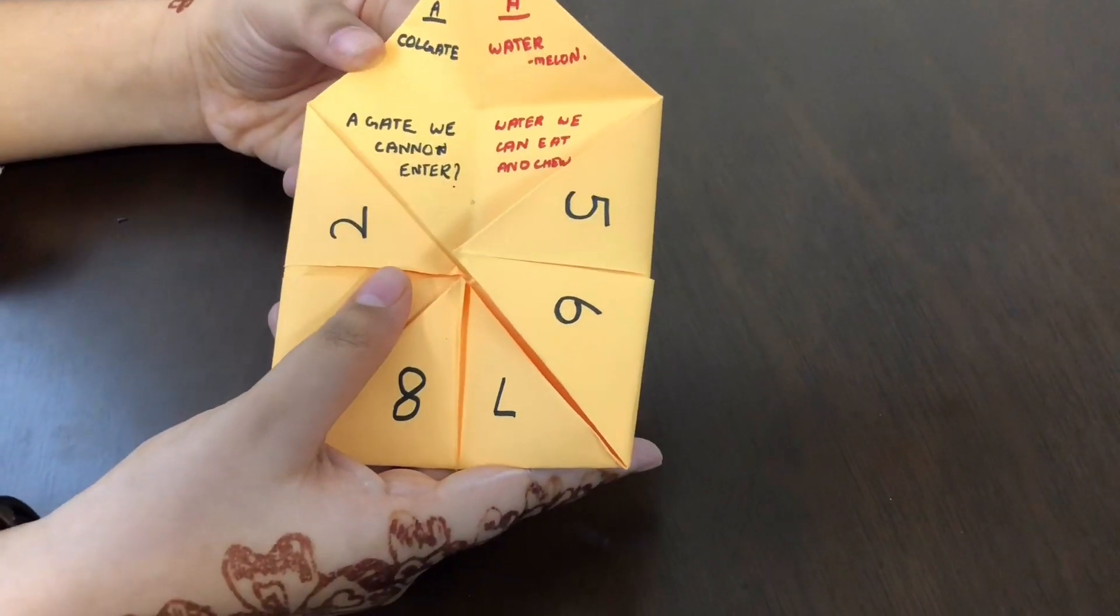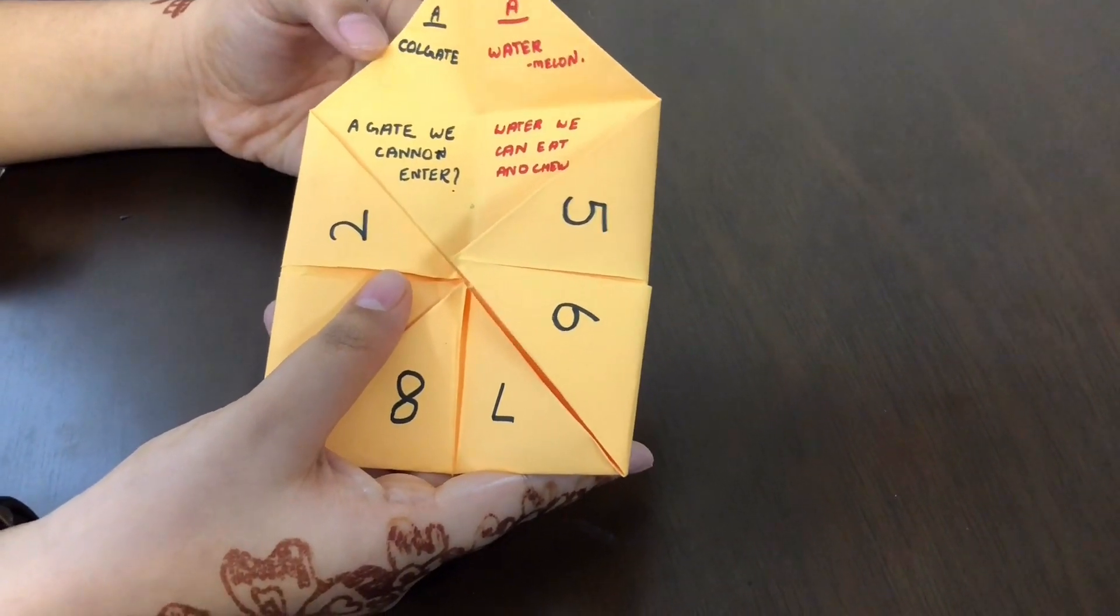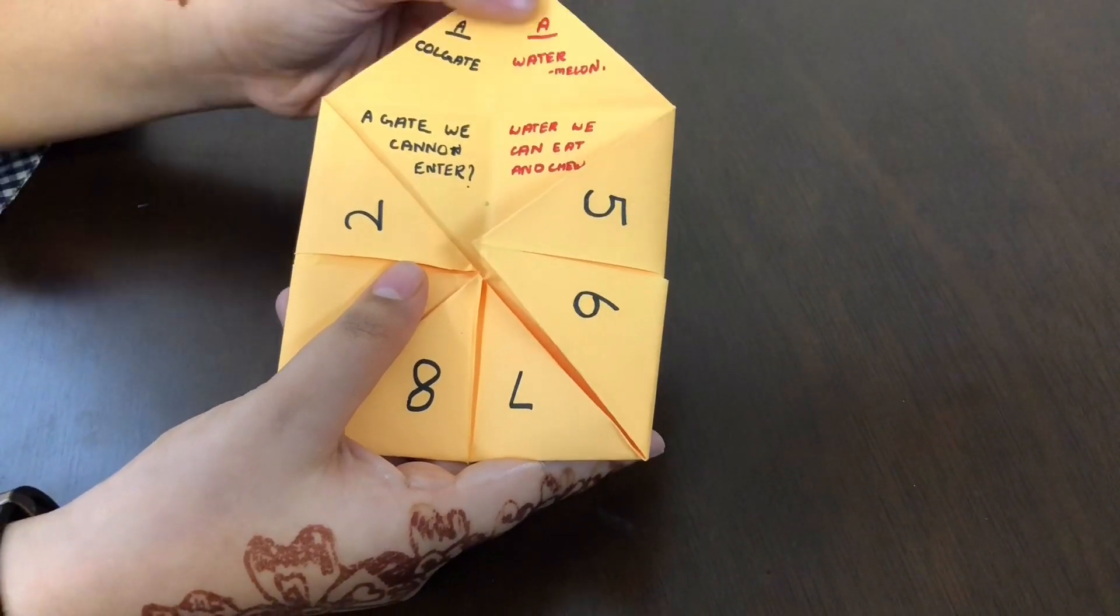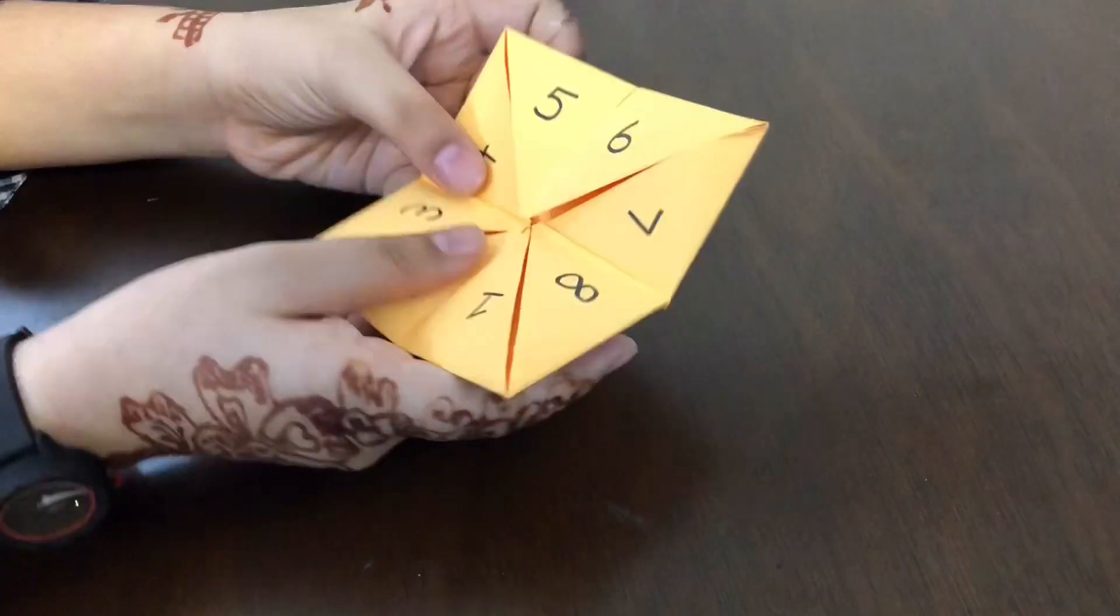And just like that, I have written here 'a gate we cannot enter.' The answer is on the top. And I have written 'water we can eat and chew,' and that's watermelon. The answer is on the top.